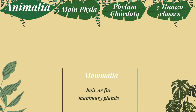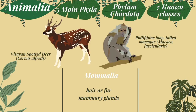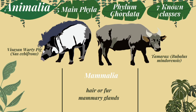Lastly, class Mammalia. Class Mammalia are air-breathing animals that have hair or fur, whose females possess mammary glands, and both sexes have three middle ear bones used for hearing and a cerebral cortex region. Example species under class Mammalia are the Philippine long-tailed macaque, tamaraw, Visayan spotted deer, and Visayan warty pig.